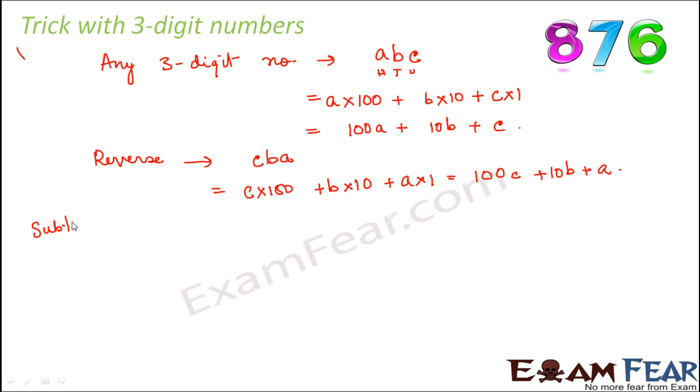But what happens when you subtract? Let us look at the subtraction part because here we will get something interesting. In subtraction, we do ABC minus CBA. So ABC is 100A + 10B + C minus 100C + 10B + A. This is equal to 100A + 10B + C - 100C - 10B - A.